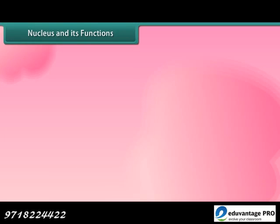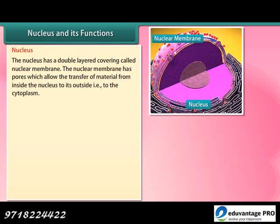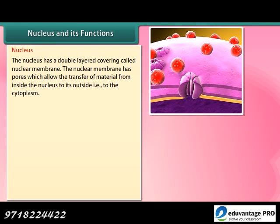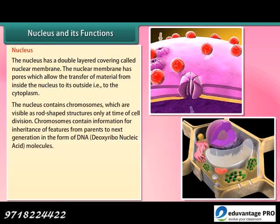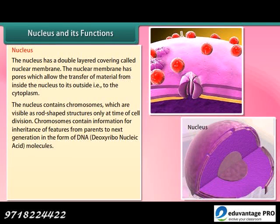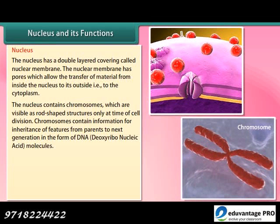Nucleus: The nucleus has a double-layered covering called the nuclear membrane. The nuclear membrane has pores which allow the transfer of material from inside the nucleus to its outside, that is, to the cytoplasm. The nucleus contains chromosomes, which are visible as rod-shaped structures only at the time of cell division. Chromosomes contain information for inheritance of features from parents to the next generation in the form of DNA — deoxyribonucleic acid molecules.